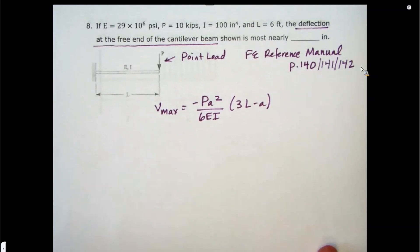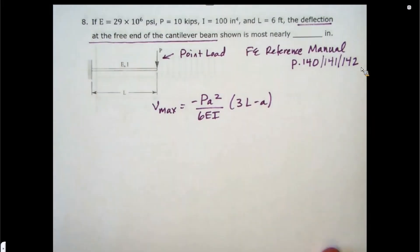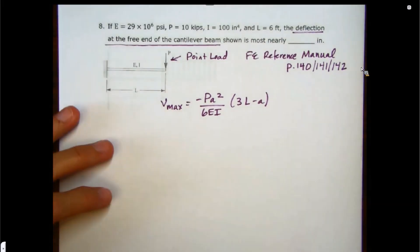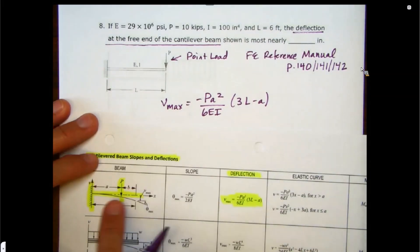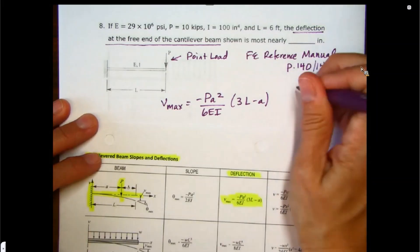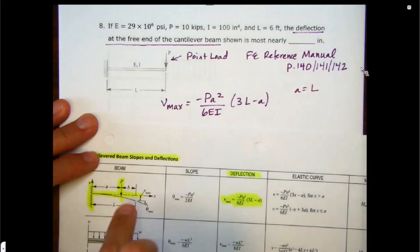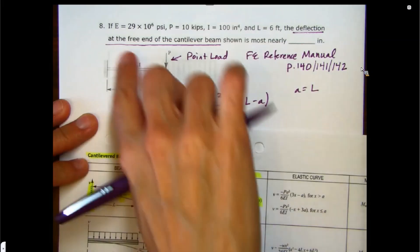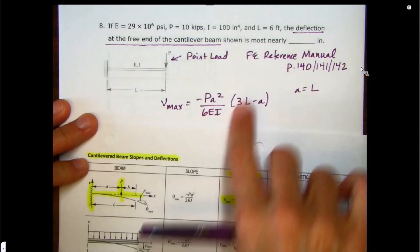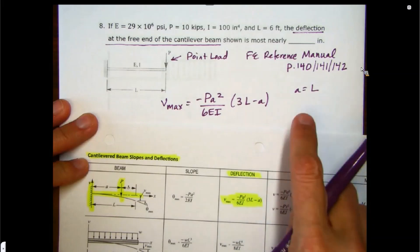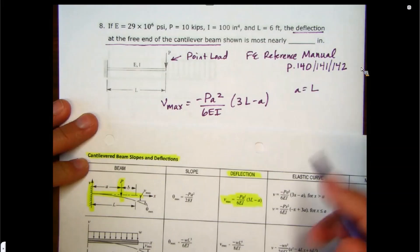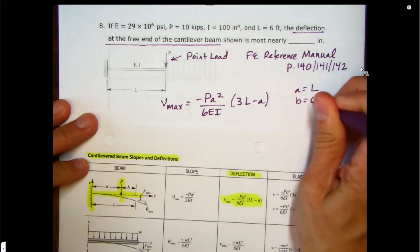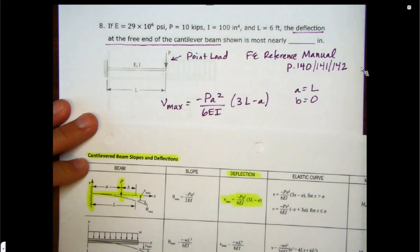So minus P A squared over 6EI times 3L minus A. Now, before I start plugging things in here, I like to look and come up with what these variables mean. And like I said, they're labeled here on the diagram. So in our case, A is just equal to L, because A is that distance from the cantilever to the point load. P is P. We could say B is equal to zero, but we actually don't have a B in this formula. So that's really all we need to know here.